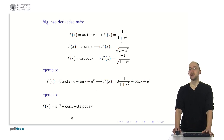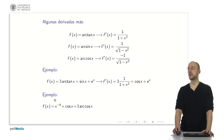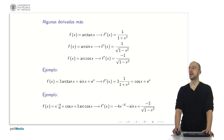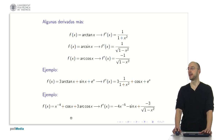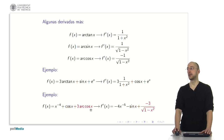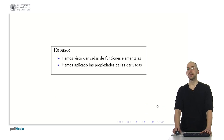Let's see another example with sums: x to the power of minus 4 plus cosine of x plus 3 times arccosine of x. For x to the minus 4: the minus 4 comes down in front, multiplies, and we subtract 1 from the exponent, giving minus 4x to the minus 5. The derivative of cosine is minus sine of x. For 3 times arccosine of x: the 3 remains, and the derivative of arccosine introduces a negative sign, giving minus 3 divided by the square root of 1 minus x squared.